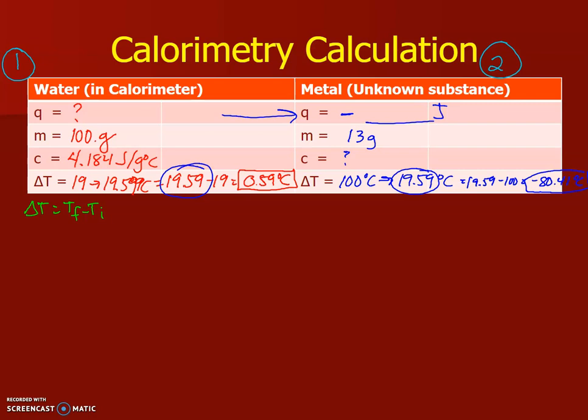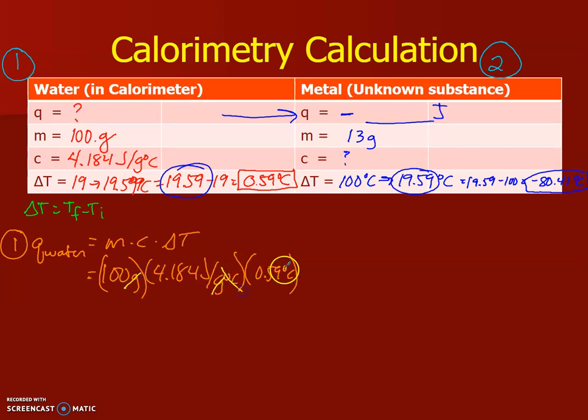First let's figure out what our Q for our water is going to be. So that's going to be mc delta T. The mass of our water is 100 grams, 4.184 joules per gram degrees Celsius, and 0.59 degrees Celsius is our temperature change of our water. Grams and grams cancel out. Degrees Celsius, degrees Celsius cancel out.